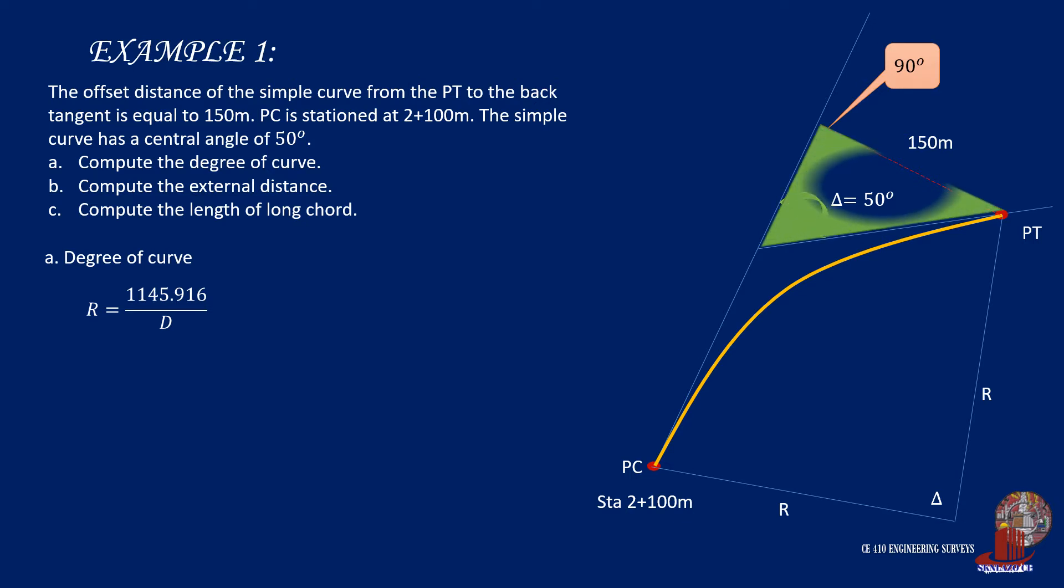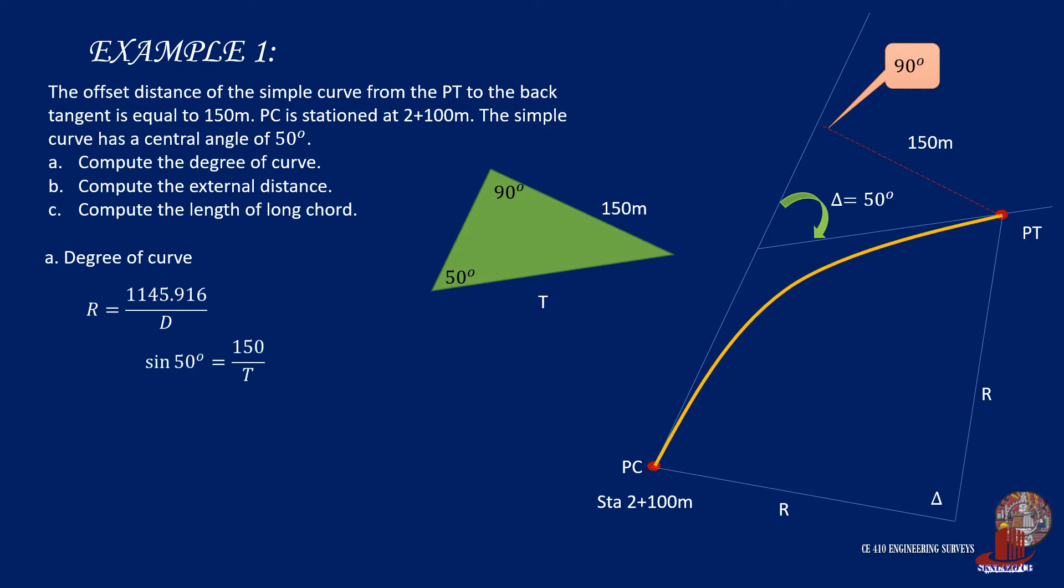By focusing on the right triangle generated by the offset distance with a side of 150 meters and angles 50 and 90 degrees, we can solve for T. By taking sine of 50 degrees, we find the tangent distance T, which is 114.91 meters. Recall that tangent distance is also formulated as R tangent of half of delta. So by plugging the previously solved T and delta, we get R as 246.43 meters.